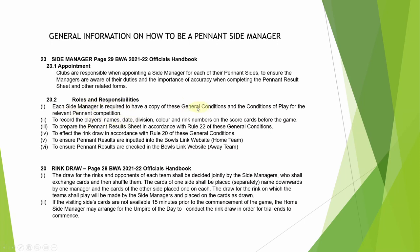Responsibilities: know what your general conditions are. Record the players' names, the division card, rink numbers and everything on the scorecards before the game. The pennant results sheet — we'll have a quick look. The rink drawer — I'll show you where that is. Rule 20 and the general conditions — you can see it right here. And ensure pennant results are input on the website, which may not be your responsibility, but we'll have a quick look at that.